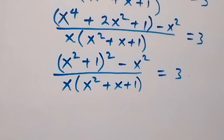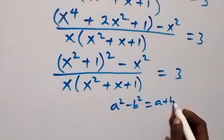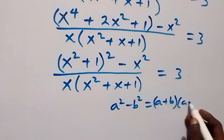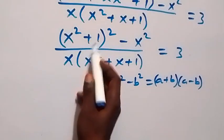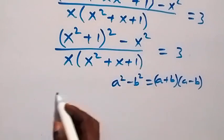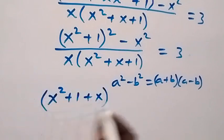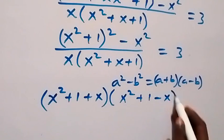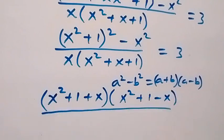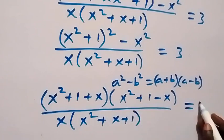We follow the pattern a squared minus b squared, which equals a plus b, multiplied by a minus b. Here a is x squared plus 1, and b is x. So the numerator becomes x squared plus 1 plus x, times x squared plus 1 minus x, divided by x times bracket x squared plus x plus 1, close bracket, equals 3.